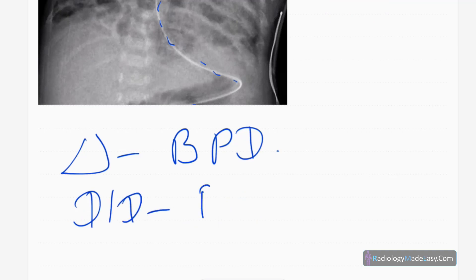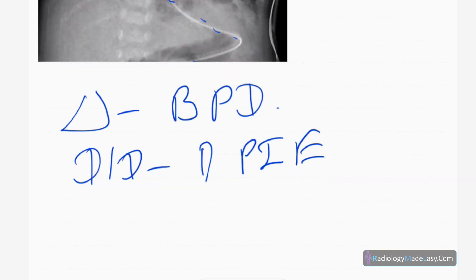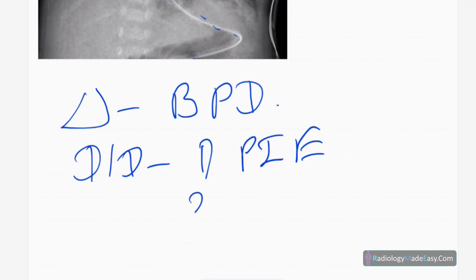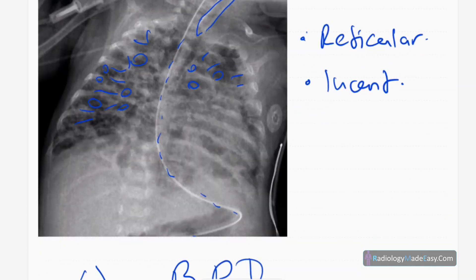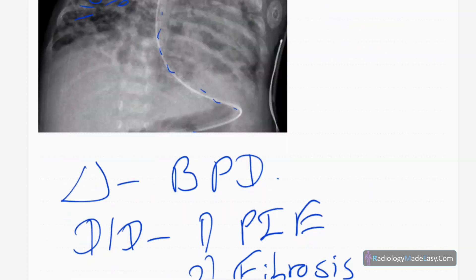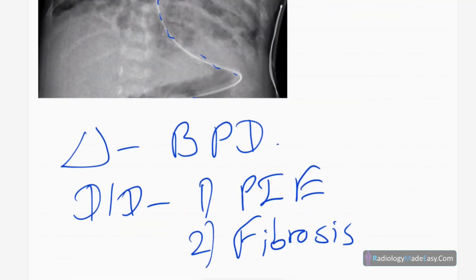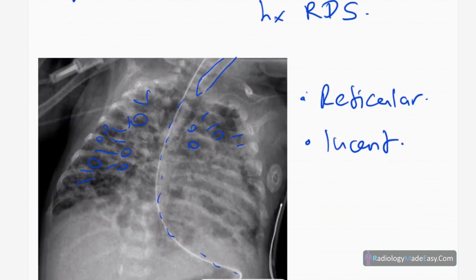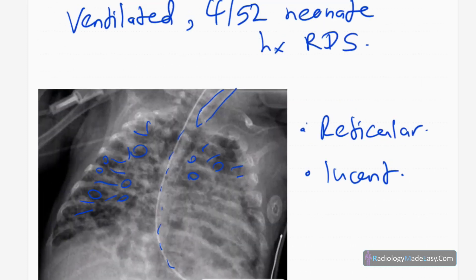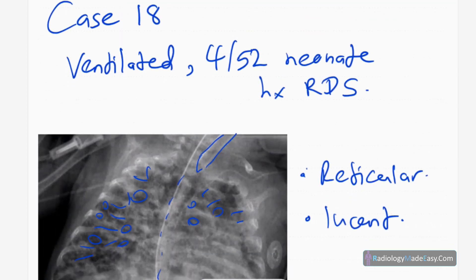The diagnosis for this patient is bronchopulmonary dysplasia, or BPD. Differential diagnoses include pulmonary interstitial emphysema, fibrotic lung disease, and interstitial pneumonia — those are the key differentials for this kind of appearance.